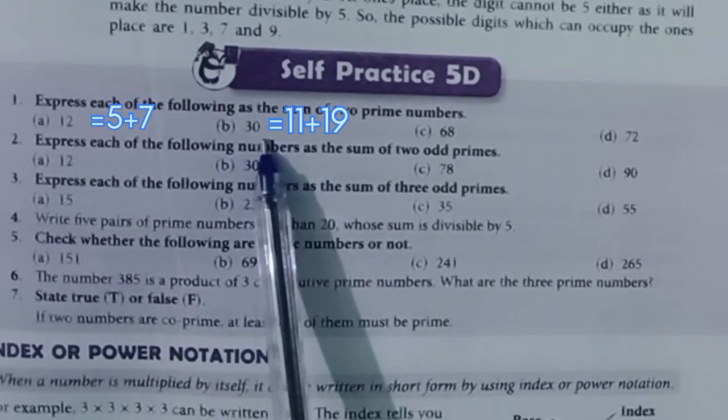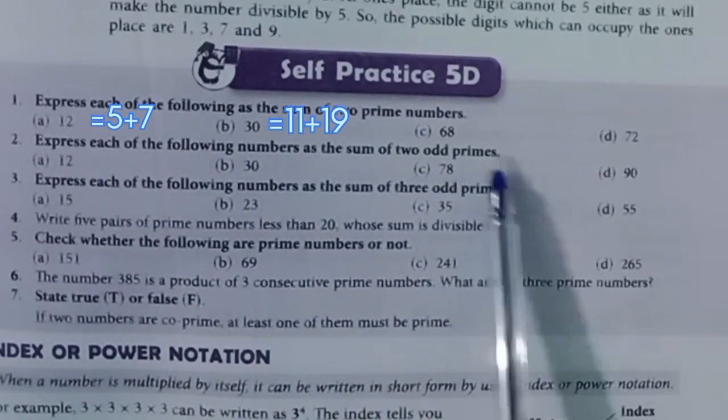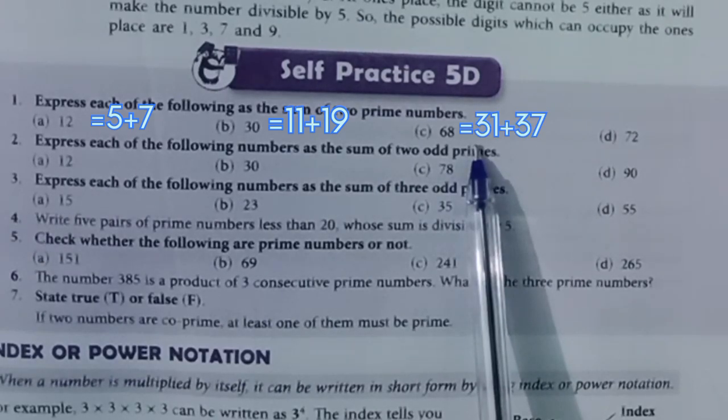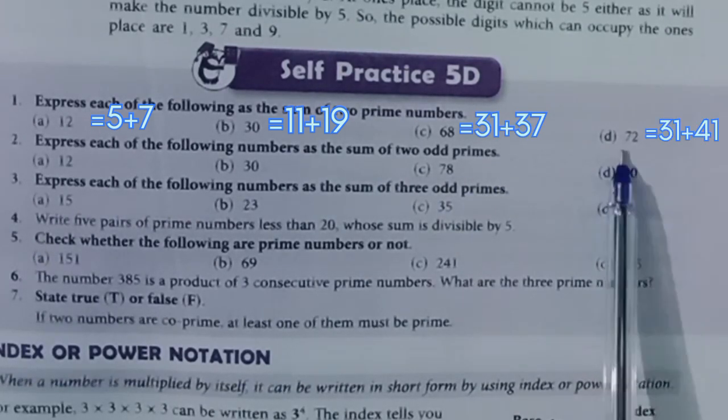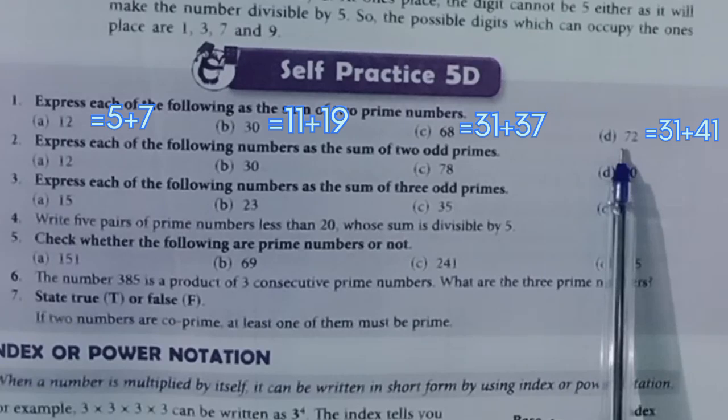B. 30, answer: 11 plus 19. C. 68, answer: 31 plus 37. D. 72, answer: 31 plus 41.